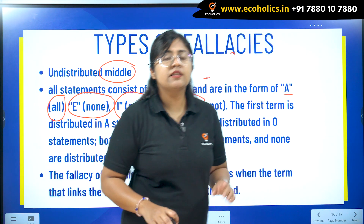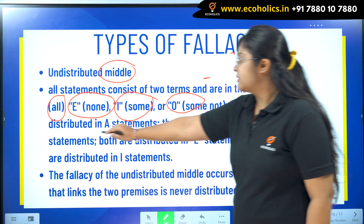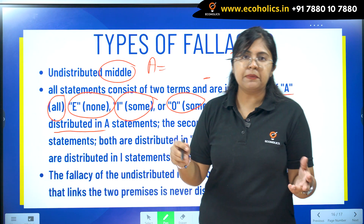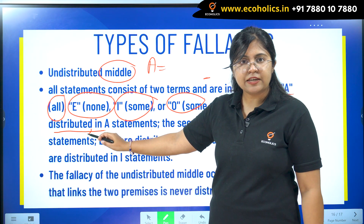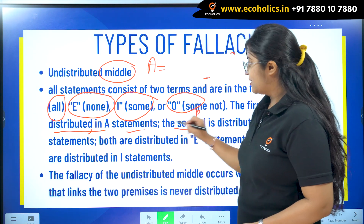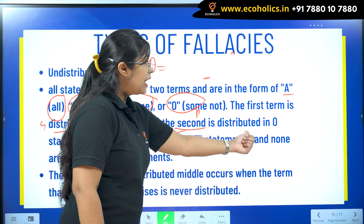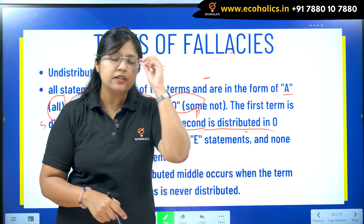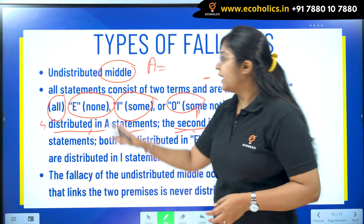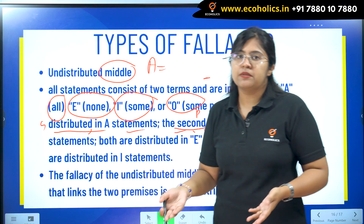In the A type of sentence, the first term is distributed, which means the subject is distributed, while the second term, the predicate, is undistributed. The O type of sentence is exactly opposite to A — in O type, the predicate is distributed while the subject is undistributed. So it works in the opposite direction.